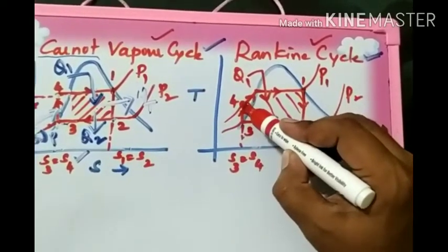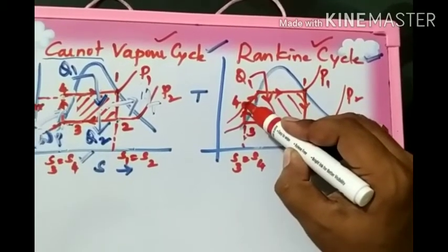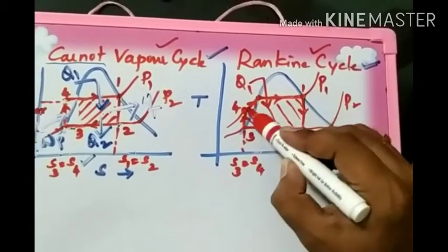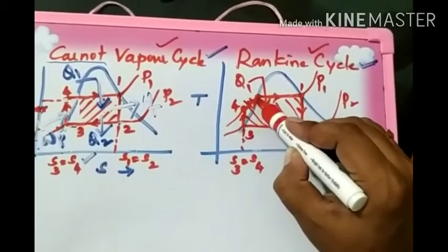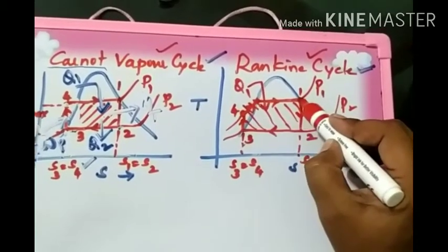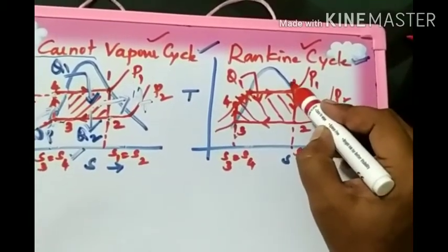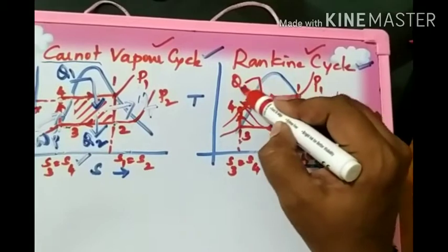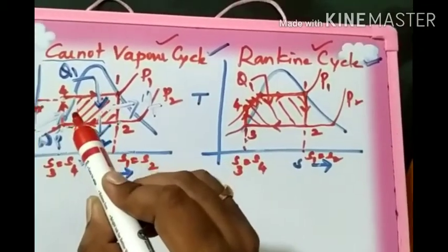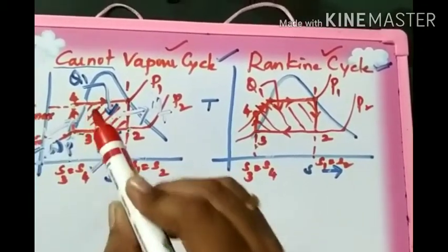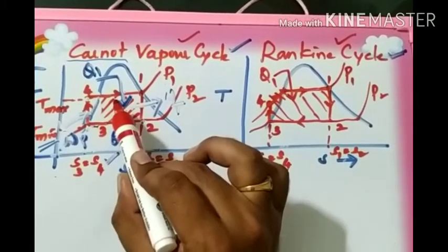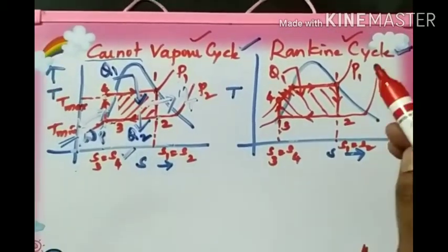The heat addition Q1 in the boiler occurs such that sub-cooled water initially converts into saturated water, then converts into saturated steam. During this phase transformation there is a continuous increase in temperature until it reaches saturated water, but temperature remains constant only during the phase change. So in the Rankine cycle the heat addition process occurs at varying temperature, whereas in the Carnot cycle heat addition occurs at constant temperature — which is practically not possible, making it an ideal process.